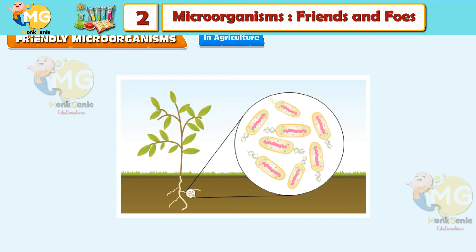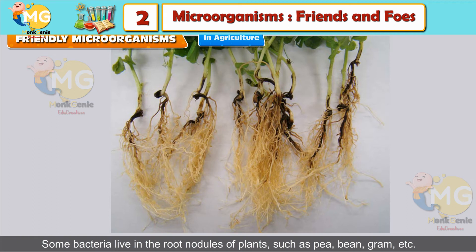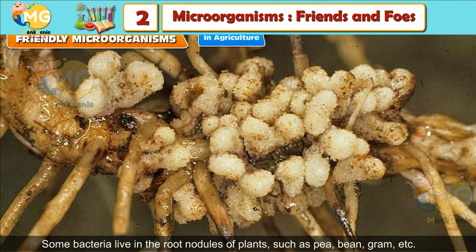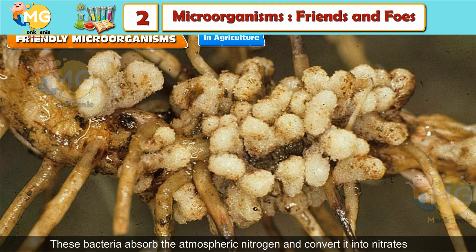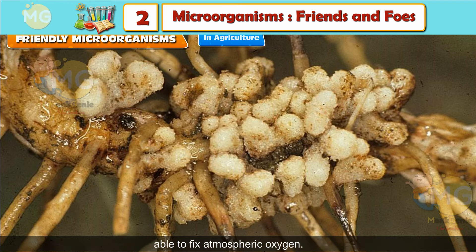In agriculture: Some bacteria live in the root nodules of plants such as pea, bean and gram. These bacteria absorb atmospheric nitrogen and convert it into nitrates, which serve as natural fertilizers for plants. Some blue-green algae are also able to fix atmospheric nitrogen.